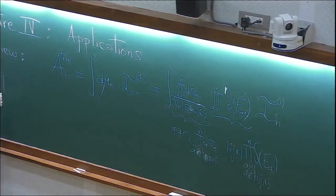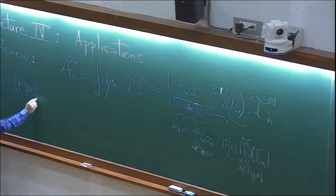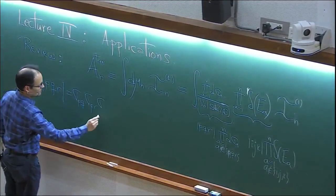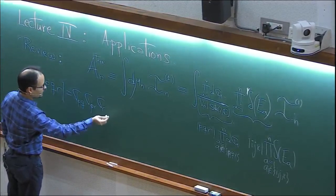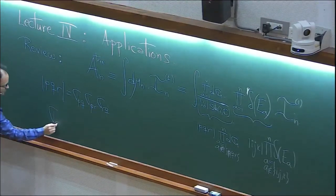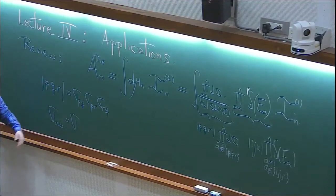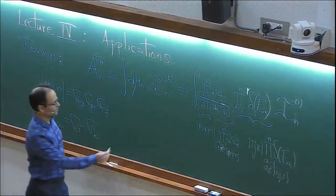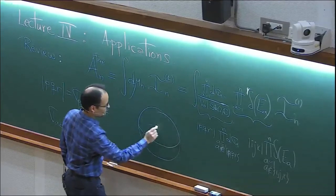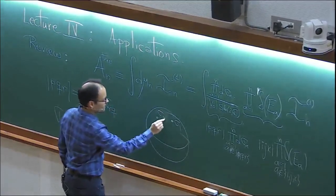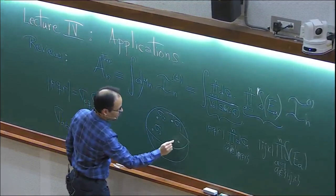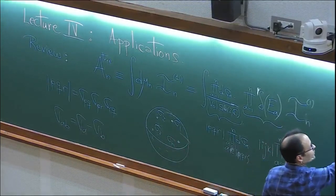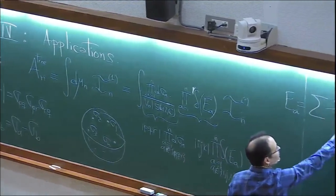These Vandermonde determinants are simply collections of differences of locations of punctures or mark points. Our notation was that sigma with two indices meant the difference of the two points on the sphere. So we had a sphere with points sigma_1, sigma_2, all the way to sigma_n. Each of these equations was given something of this form.